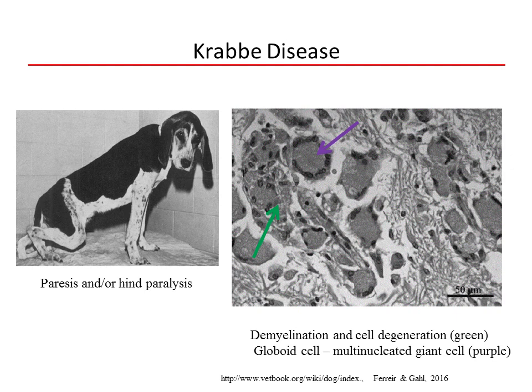The image demonstrates some of the observations associated with neurological injury in animals with Krabbe's disease. The picture on the left is a hound with profound hind leg paresis caused by demyelination of the neurons. Within the image on the right, the green arrow points out myelin degeneration characterized by fragmentation of the myelin, while the purple arrow shows a multinucleated giant cell, also known as a globoid cell, near the myelin debris.